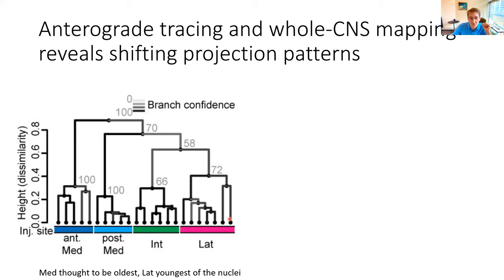From the evolutionary perspective, this directly suggests that all these different subnuclei may have evolved by a process of duplication of this whole cell type set, followed by some divergence — so that you just plop in copies of these different subnuclei next to each other with this expanding cerebellum over evolutionary time.